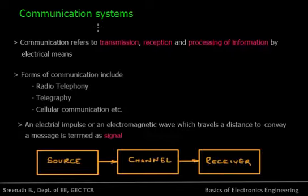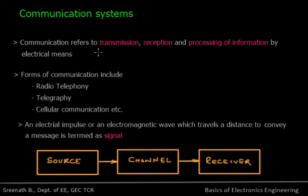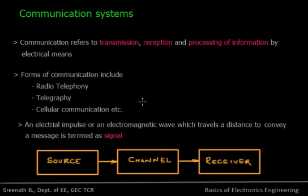What is basically a communication system? Communication refers to the transmission, reception and processing of information by electrical means. That is, we have some information or signal which can be transmitted, received, and processed, and the information has to be accessed at the end point. Different types of communication include radio communication, telegraphy, cellular communication, and TV. All these communication forms are included in these types of communication systems.